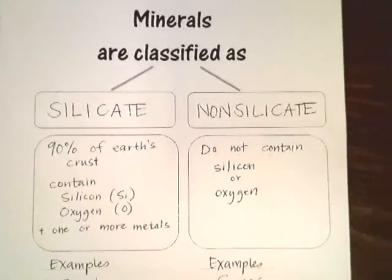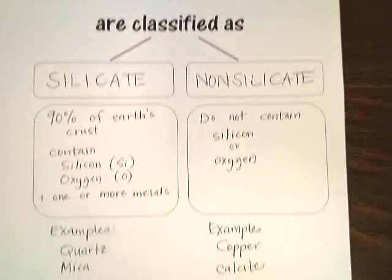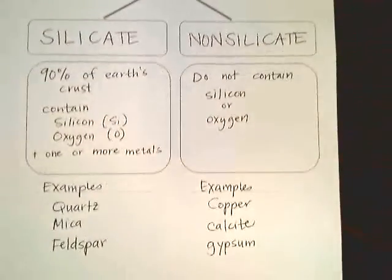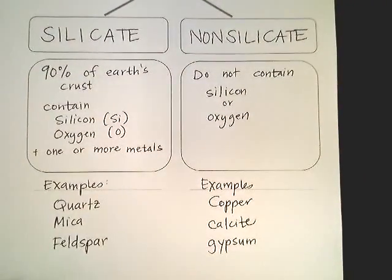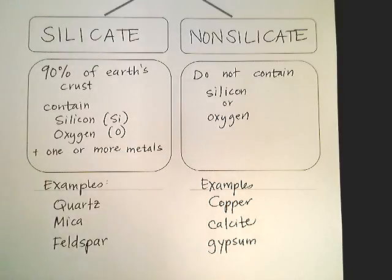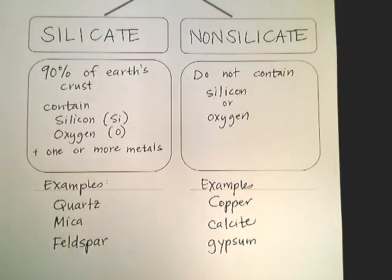So there you go — all minerals are classified as silicate or non-silicate. That's your graphic organizer, flowchart, whatever you want to call it. This goes on page five in your notebook. If you lose this sheet, you're welcome to redraw it. Thanks, y'all.